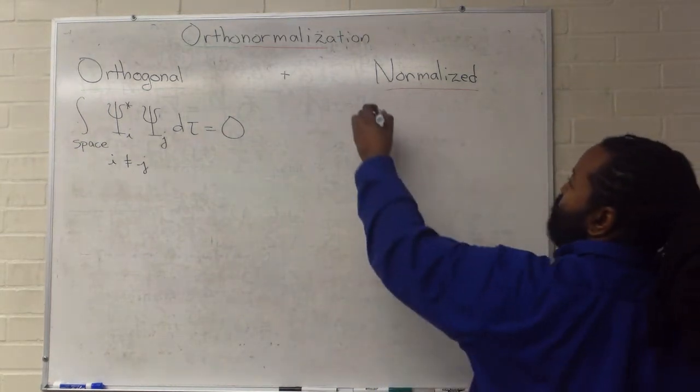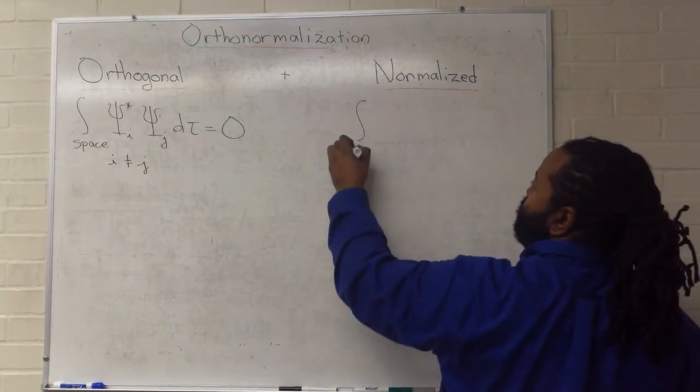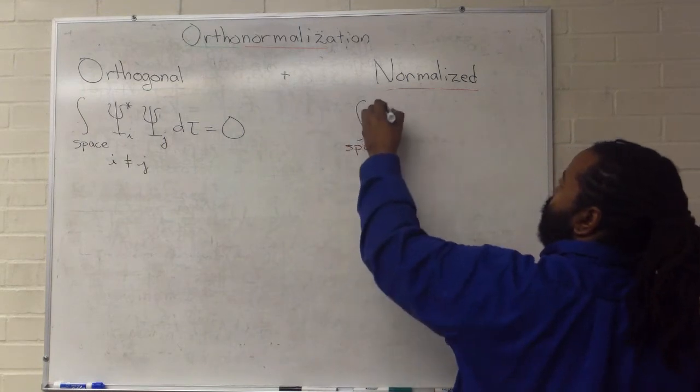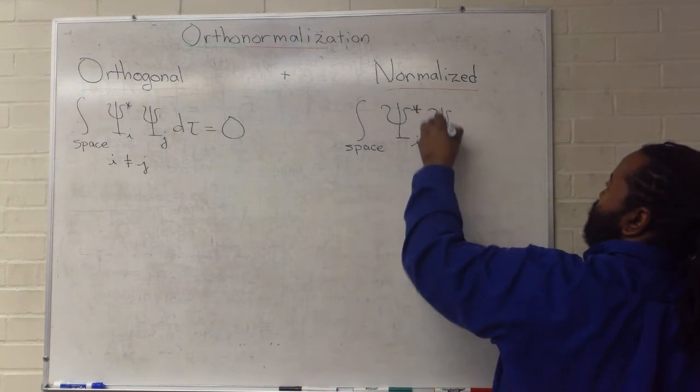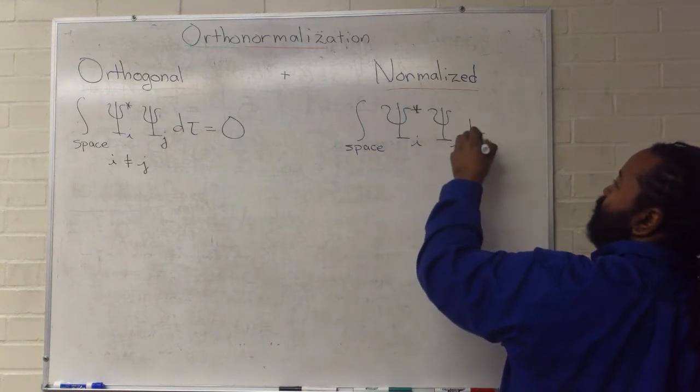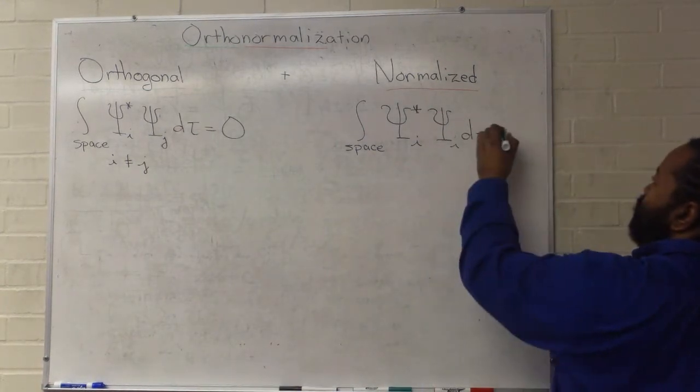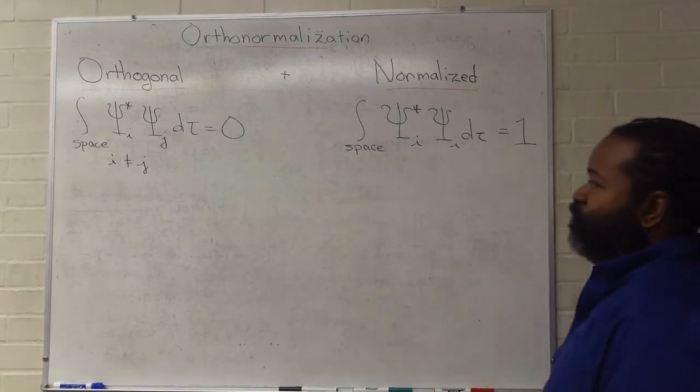In the case of something being normalized, when we integrate over all space, and we have identical indices, this will need to be one.